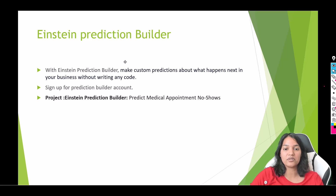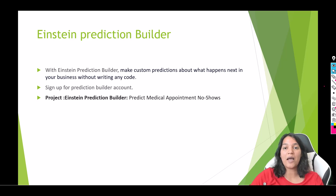With Einstein Prediction Builder, you can make custom predictions about what happens next in your business without writing any code. Without writing any code, you will be able to predict what is going to happen in your business next — how much sales you're going to make, how much revenue you're going to produce, how much profit you're going to have next year. It can help you drive these predictions.